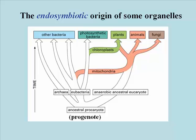Instead, the bacterium became an endosymbiont, reproducing and providing energy to the host cell. Likewise, the blue-green algae or cyanobacterium evolved to become an endosymbiotic chloroplast. This illustration places the endosymbiotic origins of mitochondria and chloroplasts in the context of an evolutionary tree.